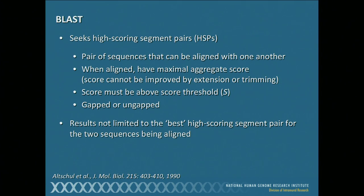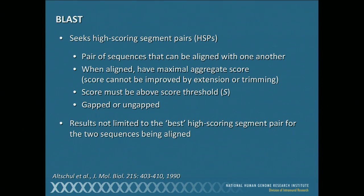Back to BLAST, the Basic Local Alignment Search Tool. What BLAST seeks to do is find things called high-scoring segment pairs, or HSPs — quite simply, pairs of sequences that can be aligned with one another. When they are aligned, based on our scoring matrices, they have the largest maximum score possible — you can't make that score better by making the alignment longer or shorter. They have to break a score threshold, and they can be either gapped or ungapped. Since this method is looking for these little paired sub-sequences using a local alignment method, the results you get back are not limited to just the best alignment; they give you all of the plausible alignments between two sequences.